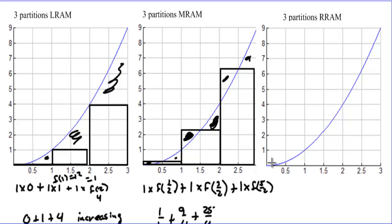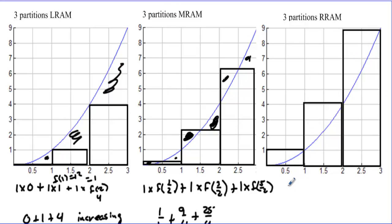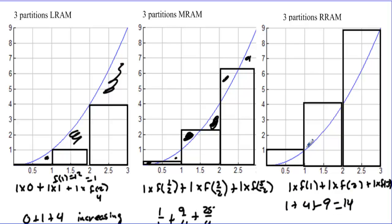On the third method, RRAM — Right Rectangular Approximation Method — we still have three partitions. Each rectangle is raised until the right side hits the curve. The formula gives: 1×f(1) + 1×f(2) + 1×f(3), which equals 1 + 4 + 9 = 14. So our estimate is 14. With an increasing function and RRAM, it's definitely going to be an overestimate.